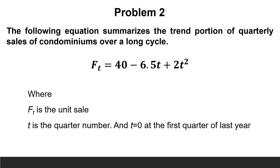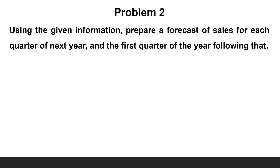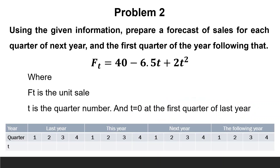The second problem. The following equation summarizes the trend portion of quarterly sales of condominiums over a long cycle. Sales also exhibit seasonal variations and the seasonal relatives are shown in the following table. Using the given information, prepare a forecast of sales for each quarter of next year and the first quarter of the year following that. As stated in the trend equation, t equals 0 at the first quarter of last year. We need to find the values of the corresponding t — the following table will help us.